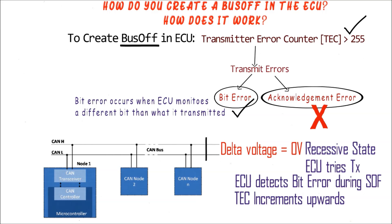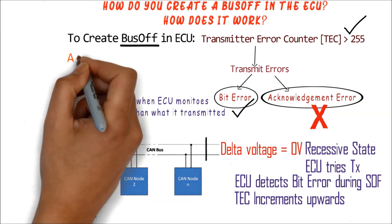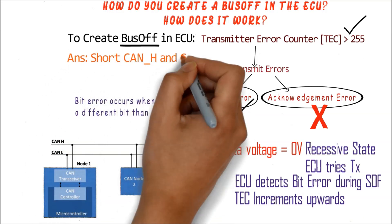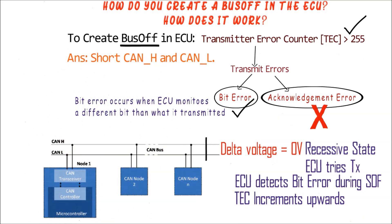So to answer this question in a single sentence: to force the ECU into a bus-off state, just short the CAN high and CAN low lines. The reason and thought process have already been explained in this video.